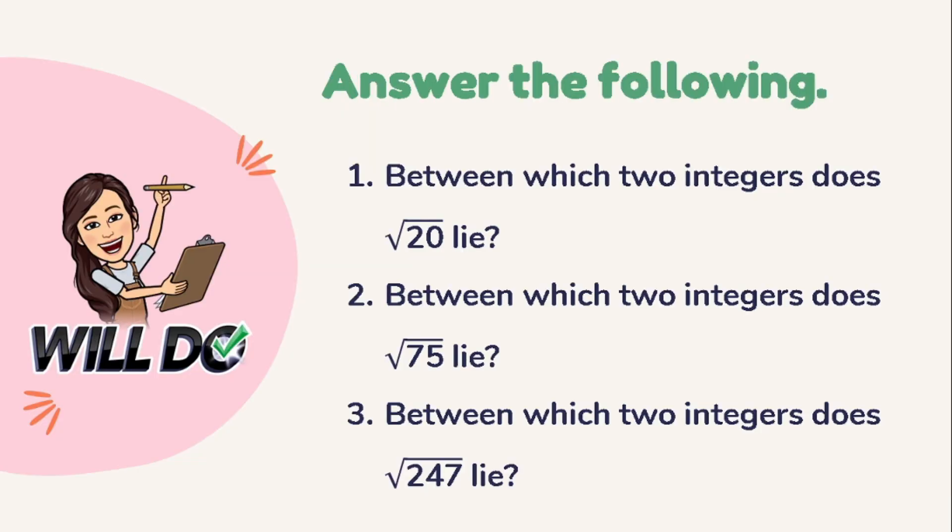Now, to check your understanding of this lesson, try answering the following questions for your practice. Number 1: Between which two integers does the square root of 20 lie? Number 2: Between which two integers does the square root of 75 lie? And number 3: Between which two integers does the square root of 247 lie? You may pause the video while answering.